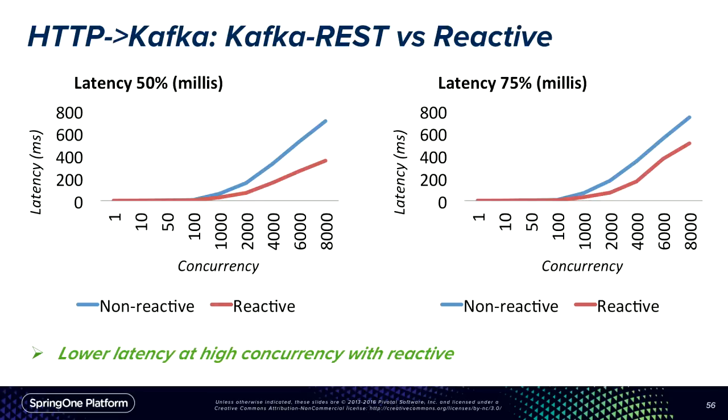For latency (50th and 75th percentile): at low concurrency, latency is very similar for both. At higher concurrency, even though reactive is handling much higher throughput, its latency is much lower than non-reactive. This demonstrates that when you have a pipeline with multiple asynchronous entities, reactive performs significantly better than non-reactive in both throughput and latency.